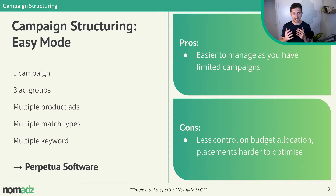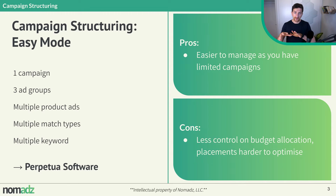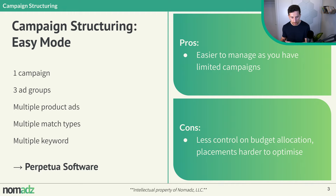The second structure is the easy one: one campaign, three or more different ad groups, multiple product ads, multiple match types, and multiple keywords. This is what Perpetua, one leading software in the market, uses.